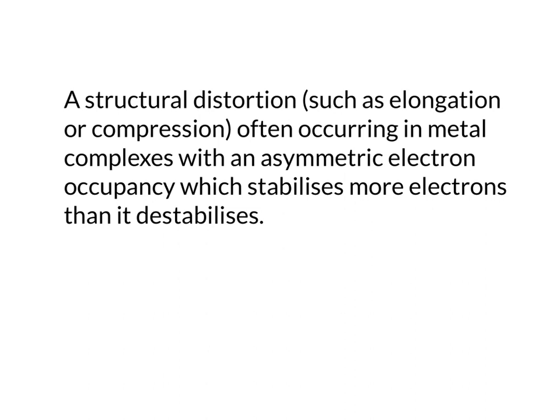I've written up a little definition here. It's a structural distortion, so there's a change in the geometry occurring for metal complexes. All the examples in this course are going to be transition metal complexes, so they'll involve d-orbitals. And it's those complexes that have an asymmetric electron occupancy. And we're going to talk about the destabilisation in just a moment.